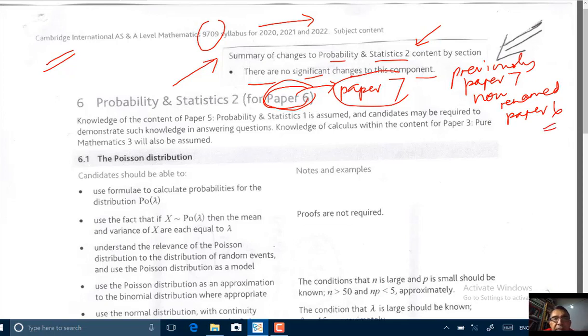For the 9709 exam. Again, for the 9709 exam for 2020 onwards. Paper 6 is where you'll be tested on Probability and Statistics 2. The whole content from the previous Paper 7 has now been moved to Paper 6.